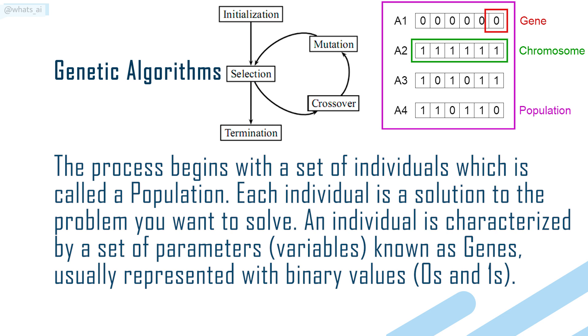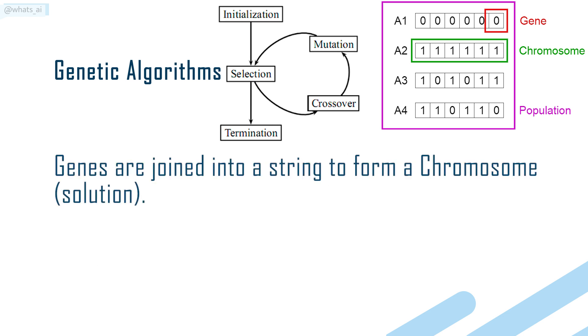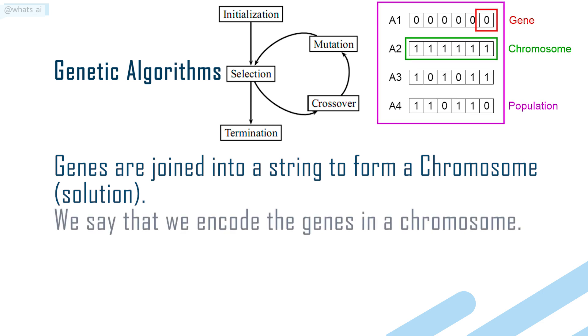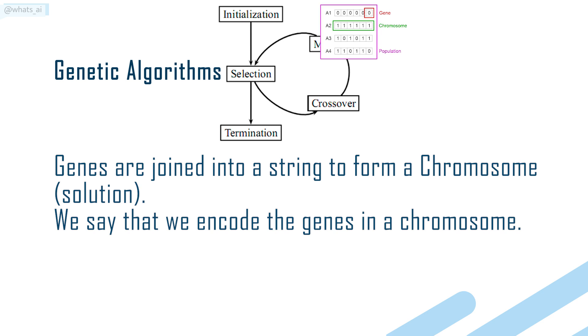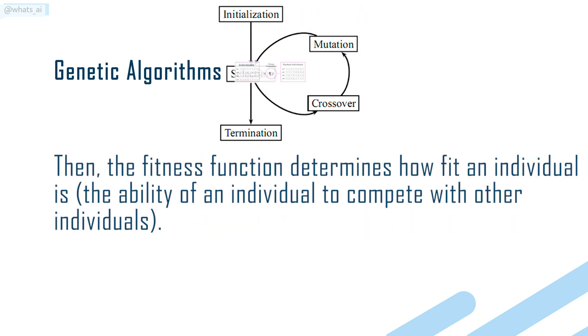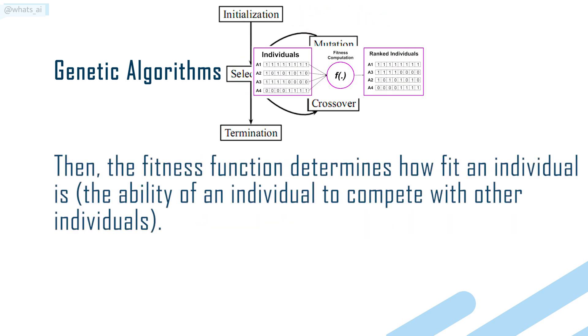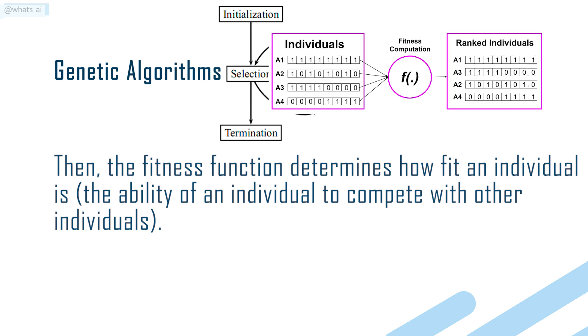Genes are usually represented with binary values, zeros and ones. Genes are joined into a string to form a chromosome solution. We say that we encode the genes in a chromosome. Then the fitness function determines how fit an individual is—the ability of an individual to compete with other individuals.